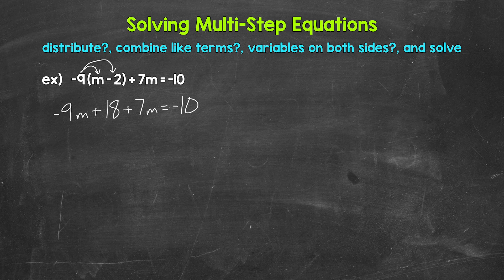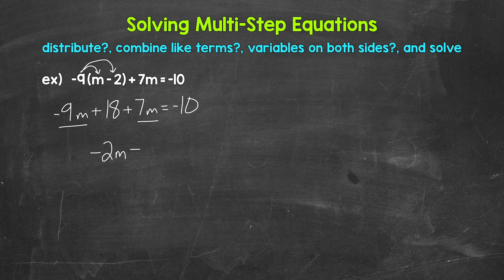Now that we removed the parentheses, we can look for any like terms to combine. Are there any like terms? Yes — negative nine m and seven m. Combining negative nine m and seven m, we can think of this as negative nine m plus seven m, which gives us negative two m. Bringing down the rest: plus 18 equals negative 10. Now we have negative two m plus 18 equals negative 10.